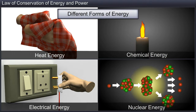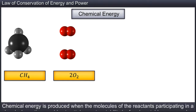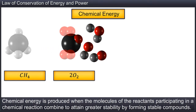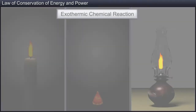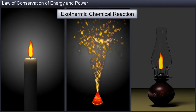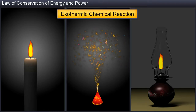Let us look at another form of energy: chemical energy. Chemical energy is produced when the molecules of the reactants participating in a chemical reaction combine to attain greater stability. The burning of any form of fuel is a chemical reaction. Burning is an exothermic chemical reaction where the chemical energy of the reactants is mainly converted into heat energy, which can later be manifested in other forms.